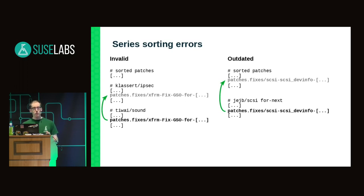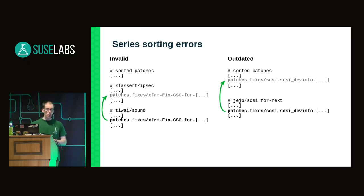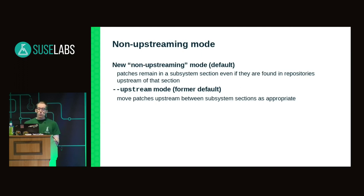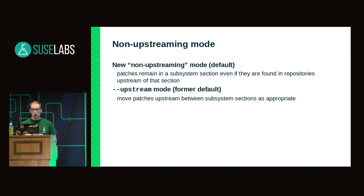It is important to distinguish between invalid and outdated because they have different remedies. The invalid case is already handled by the local commit hook. But the outdated case was not handled last year — users of kernel-source would check out SLE15 with a fresh upstream reference and couldn't add new patches because the scripts would report series.conf as outdated. Thanks to Takashi and Oliver who pushed for a fix, I introduced a new non-upstreaming mode to the scripts.